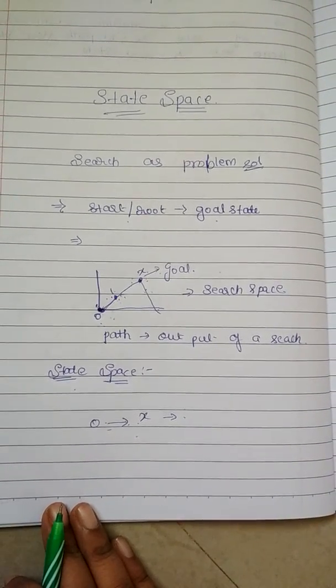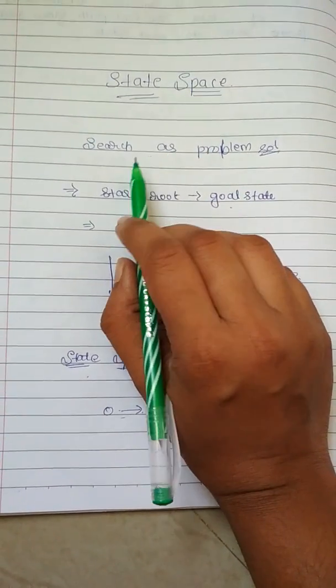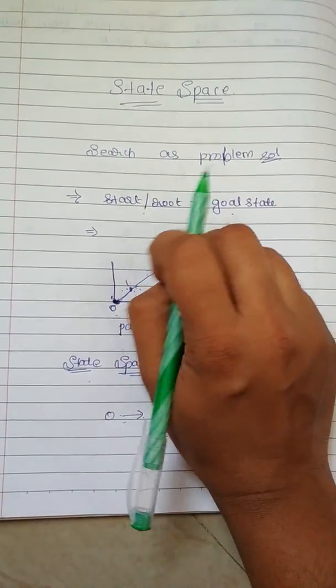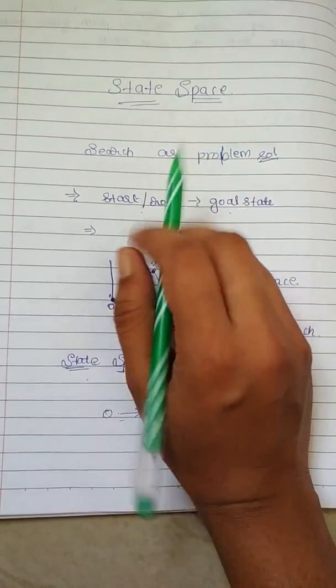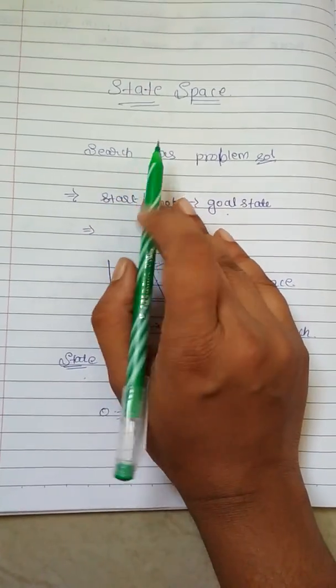Hey guys, welcome to my channel. This is Chashmish, and in today's video we will be seeing state space. Search as a problem solution - what do you mean by search? You are searching something, you are in one place and you want to search another place. Those all things will come as a search.